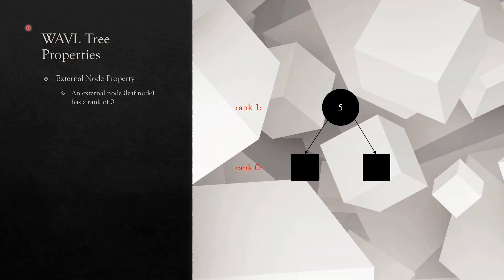The first Waffle Tree property is the external node property, which states that an external node — also referred to as a leaf node — always has a rank of zero. In a simple Waffle Tree with only one node, the external nodes at the bottom have no left or right pointers to any children. In comparison, in an AVL tree the rank starts at one, because a basic tree with only one node has a height of one. However, in a Waffle Tree we start our ranks at zero.